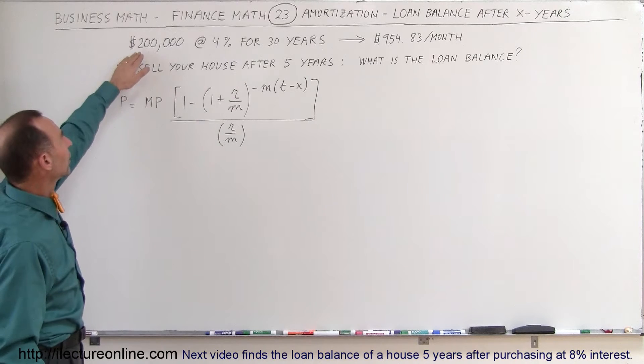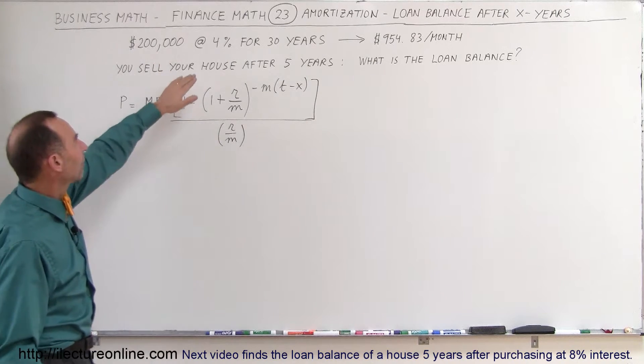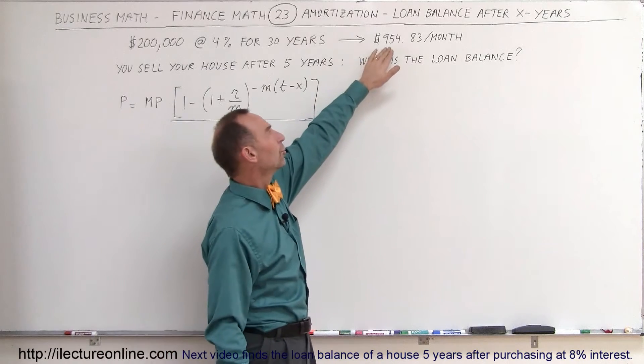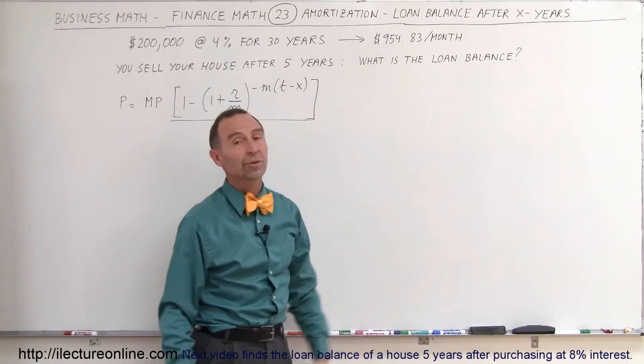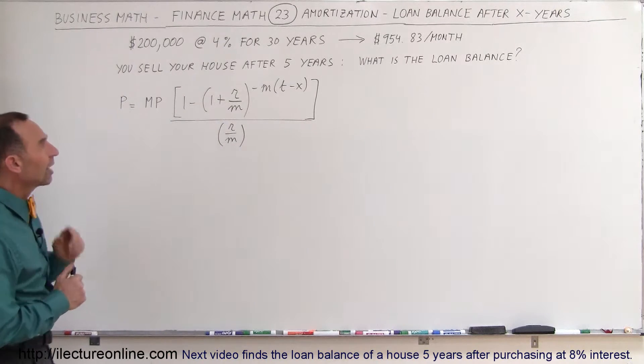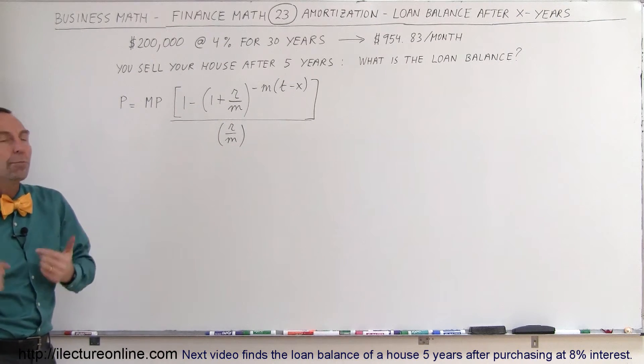Let's assume that you've got a $200,000 loan at 4% interest for 30 years, and the payments per month, as we can then calculate, would be $954.83 every month. Now, you sell your house after five years, what will be the loan balance?